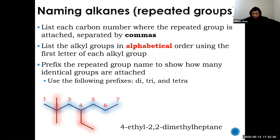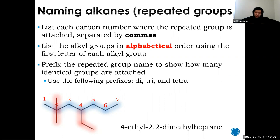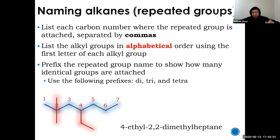Important note: you must write both position numbers even when they're the same carbon. For example, '2,2' — not just '2' — because each number tells you where one specific methyl group is located. If you just wrote one '2', I'd know one methyl is on carbon 2 but not where the other one is. A student asks: if they were on different carbons, would you put the smaller number first? Yes, the smaller number goes first, still separated by a comma.